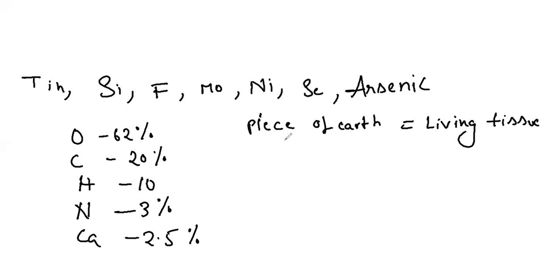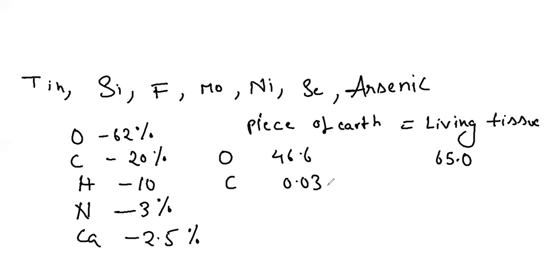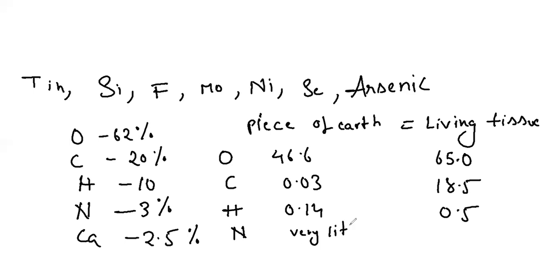For example, oxygen is 46.6 percent on earth's crust but 65 percent in the human body. Carbon is 0.03 percent on earth but 18.5 percent in living organisms. Hydrogen is 0.14 percent on earth but higher in living tissue. Nitrogen is very minimal on earth but 3.3 percent in living organisms. Silicon is 27.7 percent on earth's crust but negligible in living tissue.